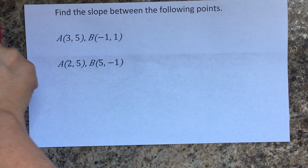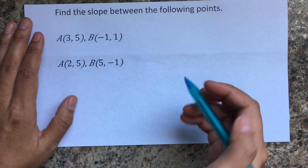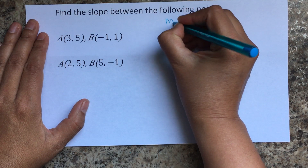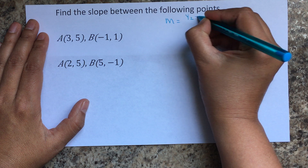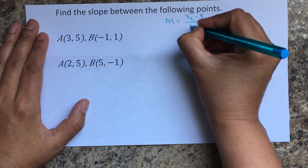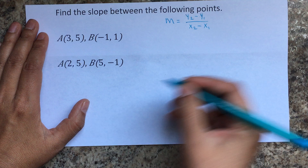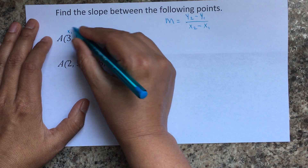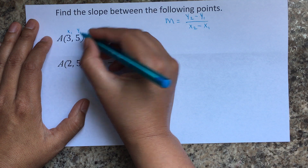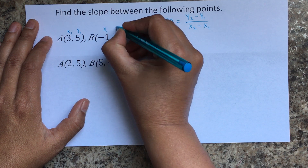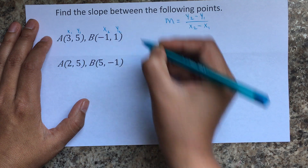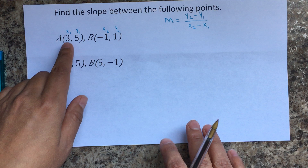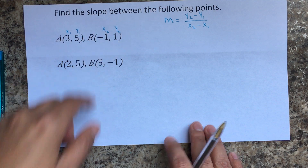Hopefully you already paused the video and tried this on your own. I want you to recall that the formula for the slope is m equals y2 minus y1 over x2 minus x1. This will be x1, y1 for point 1, and x2, y2 for point 2. Remember that those 1s and 2s don't really mean anything else than this is point 1 and this is point 2.